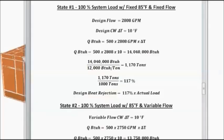So, in state 1, we can calculate the design heat rejection load from the design delta T and design flow. Right here, the heat rejection in BTUs. And we can convert this to 1,170 tons. We can compare that with the design, 1,000 tons. And we have a design heat rejection of 117% of the actual load.